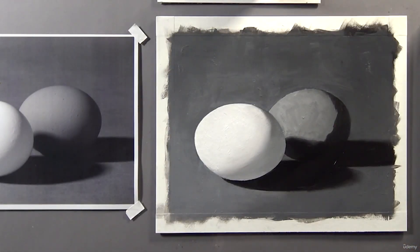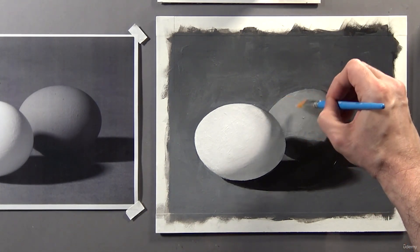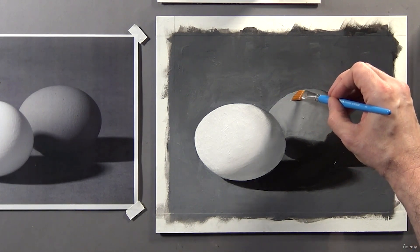I'm switching back to my half-inch angular shader to soften the brush strokes out of the blending I just did, again using the dry brush technique I explained a moment ago.